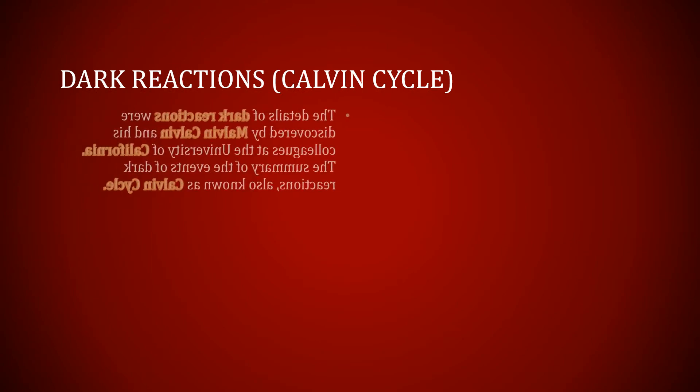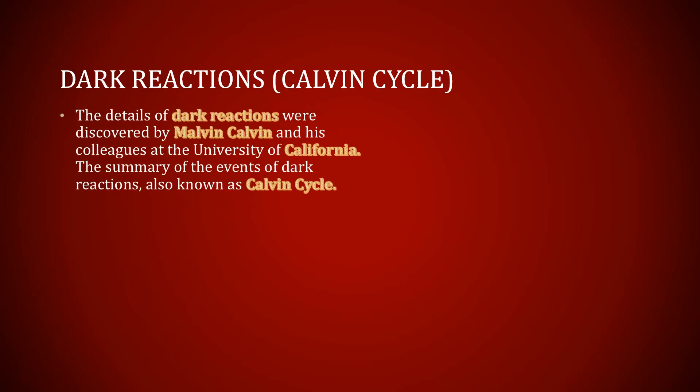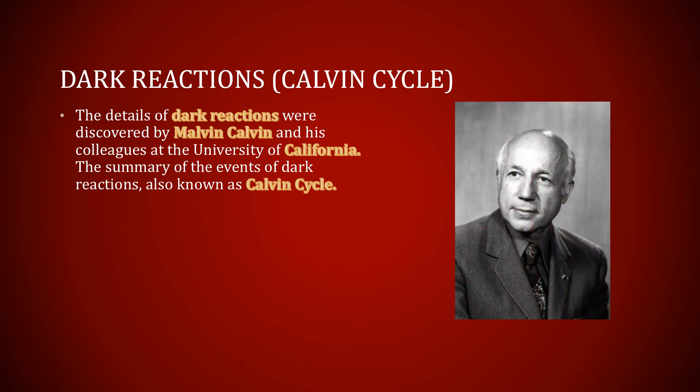The details of dark reactions were discovered by Melvin Calvin and his colleagues at the University of California. The summary of events of dark reactions which occur in photosynthesis are called the Calvin Cycle, named after the scientist Melvin Calvin.